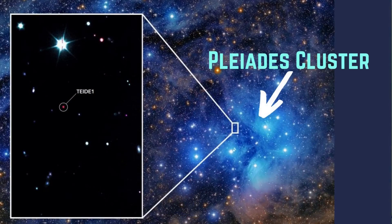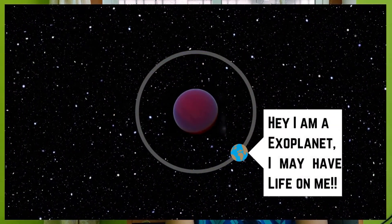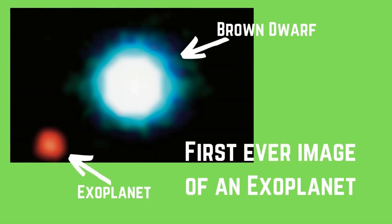Fun fact: it rains molten iron on brown dwarfs! The first brown dwarf was discovered in 1995 — it was Teide 1, an M8 object in the Pleiades cluster. On April 30, 2004, the first candidate exoplanet was discovered around a brown dwarf — it was 2M1207b, discovered by the VLT. It was the first directly imaged exoplanet.